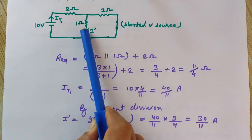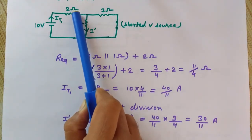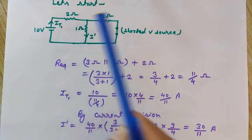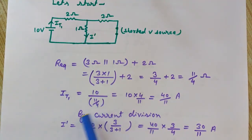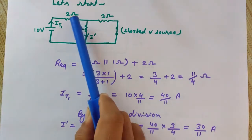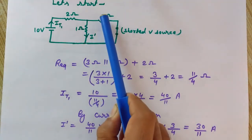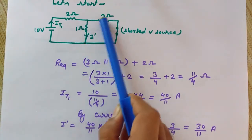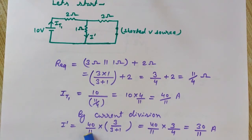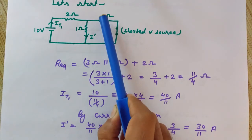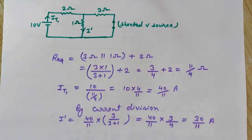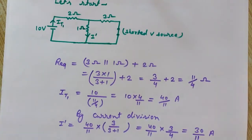Now using the current division method: the total current it1 = 40/11 A divides between the 3 ohm and 1 ohm branches. The current i' in the 1 ohm branch equals the total current multiplied by the other branch resistance divided by the total resistance: i' = (40/11) × 3/(3+1) = (40/11) × (3/4) = 30/11 amperes. This i' is due to the 10 volt source only.